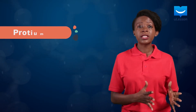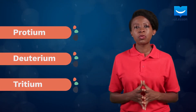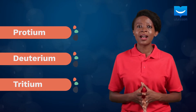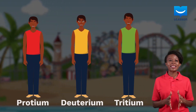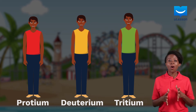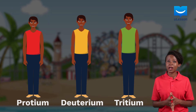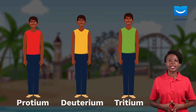Hydrogen has three naturally occurring isotopic forms. They are protium, deuterium, and tritium. These three isotopic forms of hydrogen are like three siblings who have similar looks but still have some differences. This is because protium, deuterium, and tritium all have the same number of protons and electrons but a different number of neutrons in their respective nuclei.